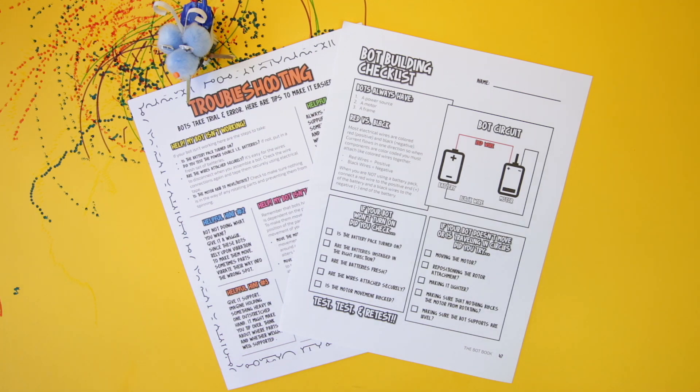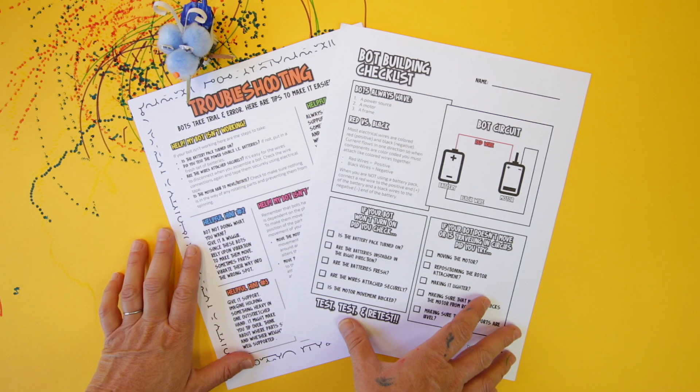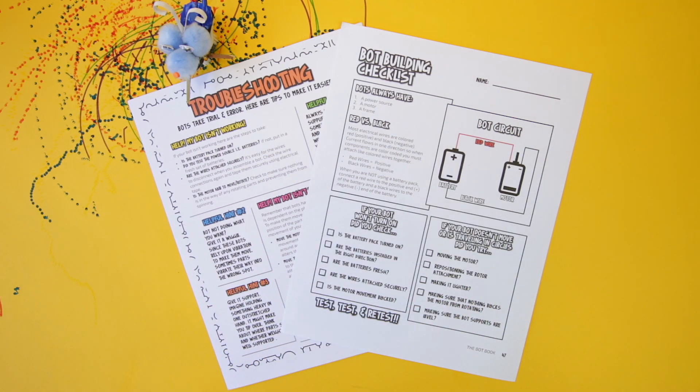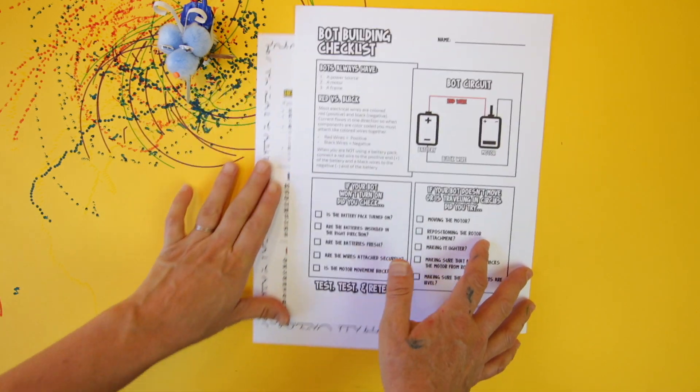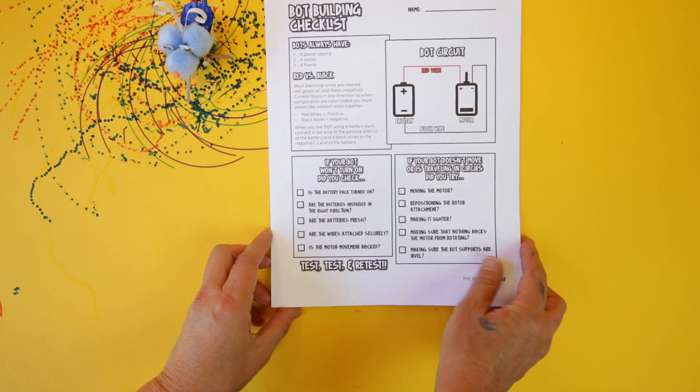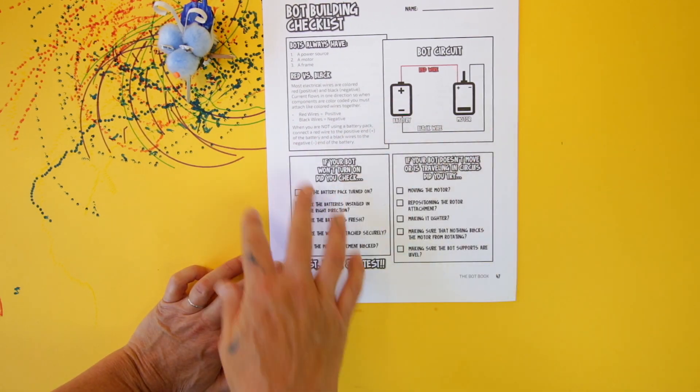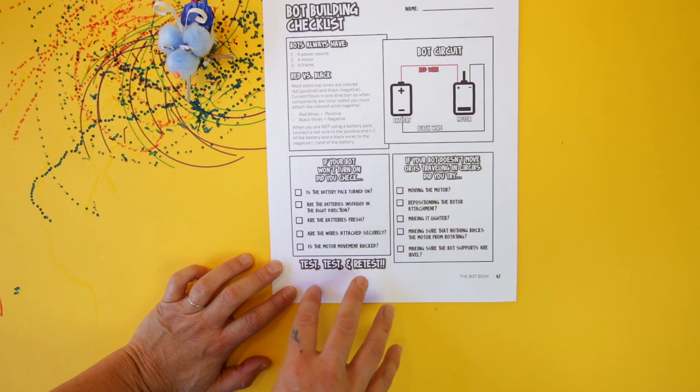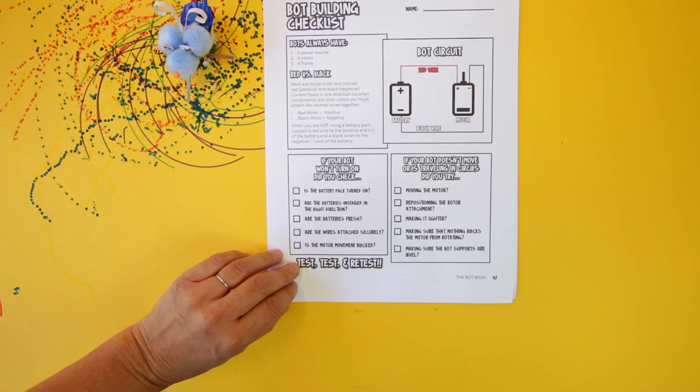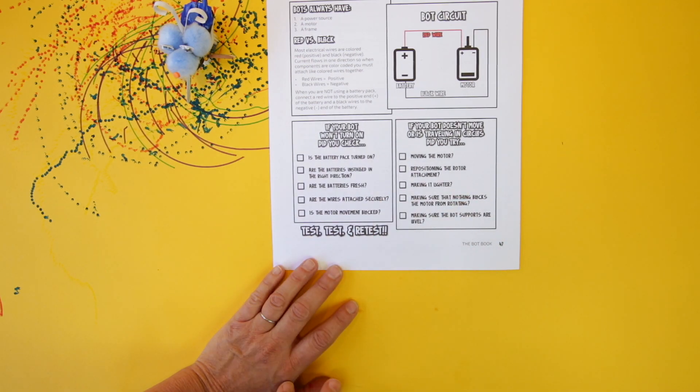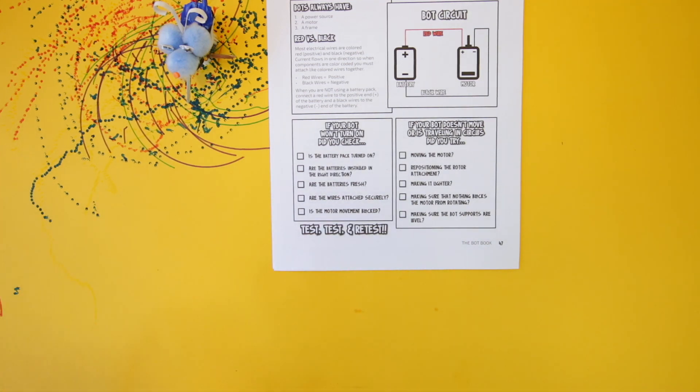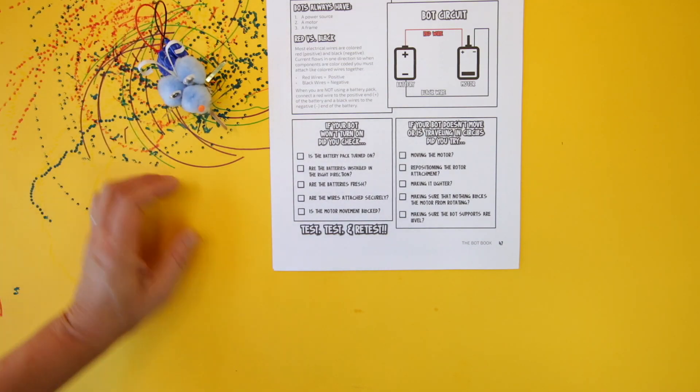And those are the major troubleshooting areas that you should be looking at when you're working with bots. One of the handiest things in our bot book is this bot building checklist. I mentioned it before and I'm going to be talking about it a little bit more in depth on the teacher tips video. However, what this is is a simplified version of the troubleshooting sheet. This is a great way to get kids to start doing the troubleshooting themselves so that they can start working through the design process and the problem solving process. So again this is a wonderful resource in the book.